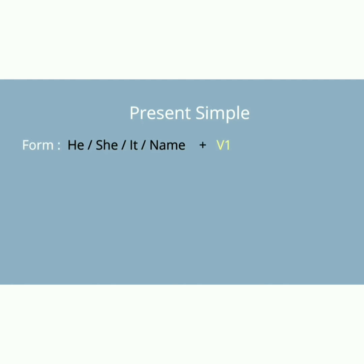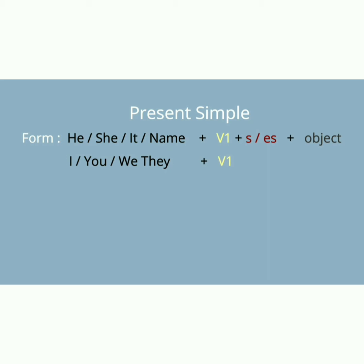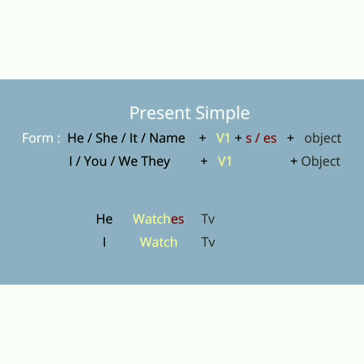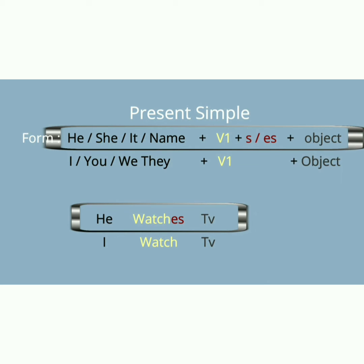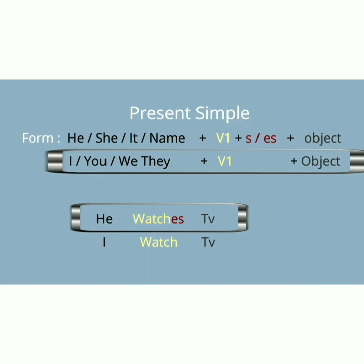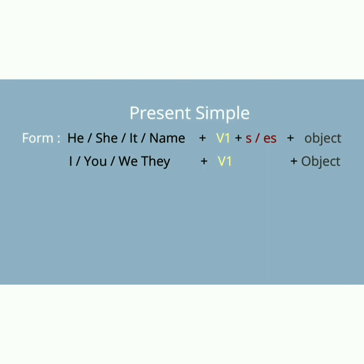Present simple form میں he, she, it کے ساتھ ہم verb کی first form کے ساتھ S/ES لگائیں گے اور object لگائیں گے۔ Plural میں I, you, we, they کے ساتھ صرف first form لگتی ہے — S/ES نہیں آگا۔ یہ یاد رکھنا ہے: singular things (he, she, it, name) کے ساتھ first form + S/ES, اور plural (I, you, we, they) کے ساتھ صرف first form اور object۔